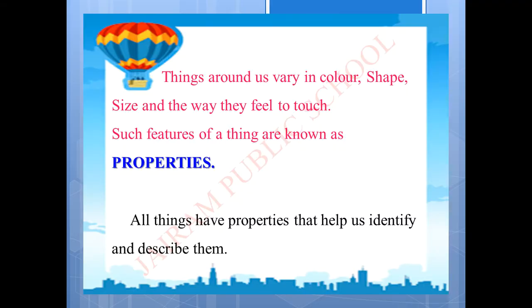Things around us vary in color, shape, size and the way they feel to touch. Such features of a thing are known as properties. All things have properties that help us to identify and describe them.